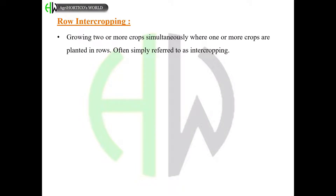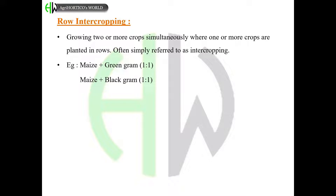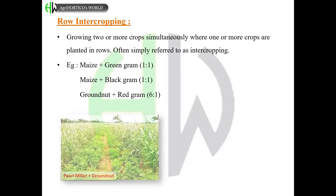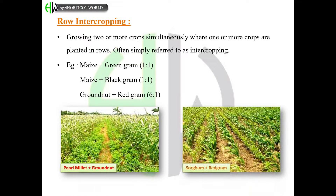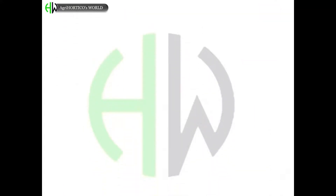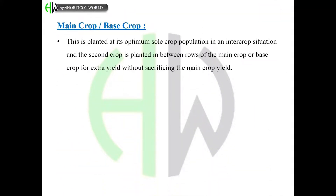In row intercropping, two or more crops are grown simultaneously where one or more crops are planted in rows — often simply referred to as intercropping. Examples include maize with green gram, maize with black gram in equal ratios, and groundnut with red gram in a 6:1 ratio.